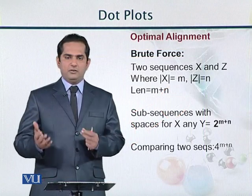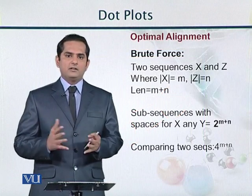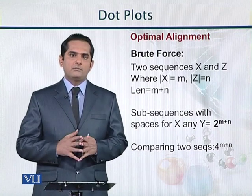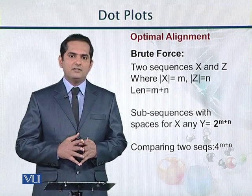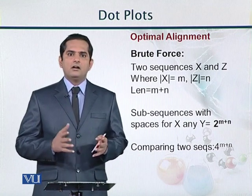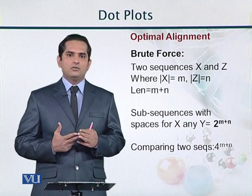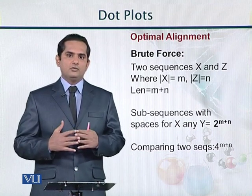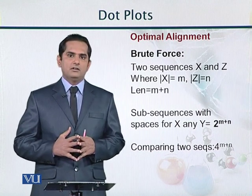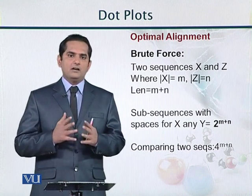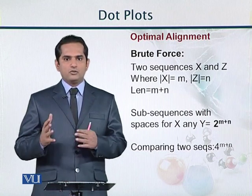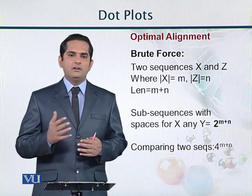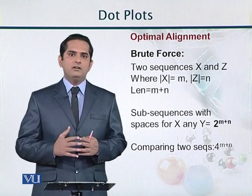Visual alignment using dot plot matrices is one technique for sequence alignment. Now, if we try to align two sequences using a brute force algorithm, how many operations will we need?